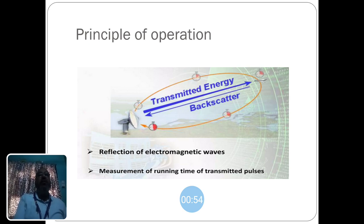The radar sends waves through the transmitter and they are reflected back when the signal encounters an object. The running time of the transmitted pulses is measured.